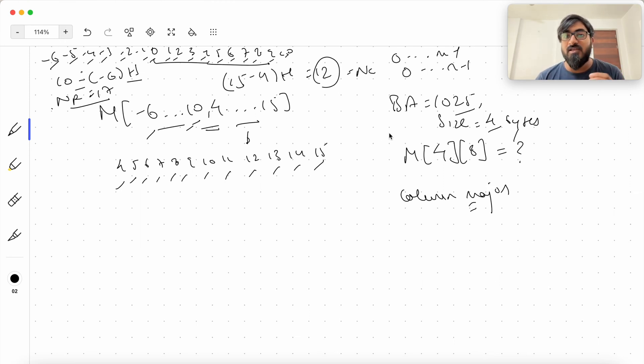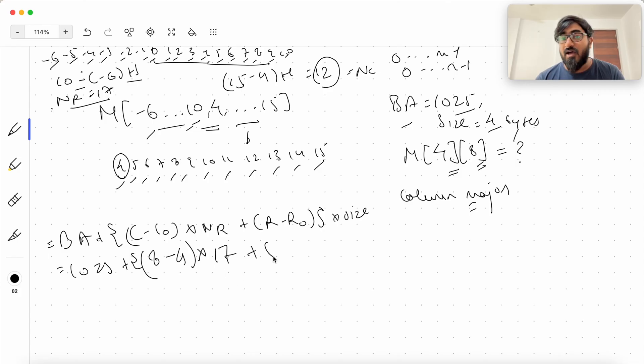We have number of rows. We have number of columns. We have base address. We have size. We can find the address of this location using the formula for column major wise, which is base address plus (C minus C0) into number of rows plus (R minus R0), this whole into size. So base address is 1025 plus C minus C0. C is 8. This is the column. C0 is the first column, which is 4. First column index is 4.